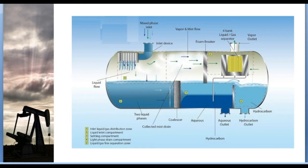A four-bank liquid gas separator is used. The vapor outlet stores the gas. This is the overall process. First, in the inlet zone, we start the separation — this is the preliminary separation, handling both high-level gas and low-level gas, as well as the oil plus water mixture.